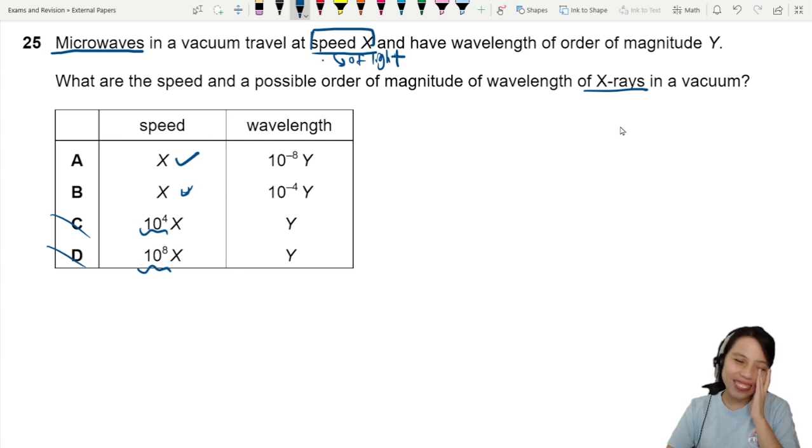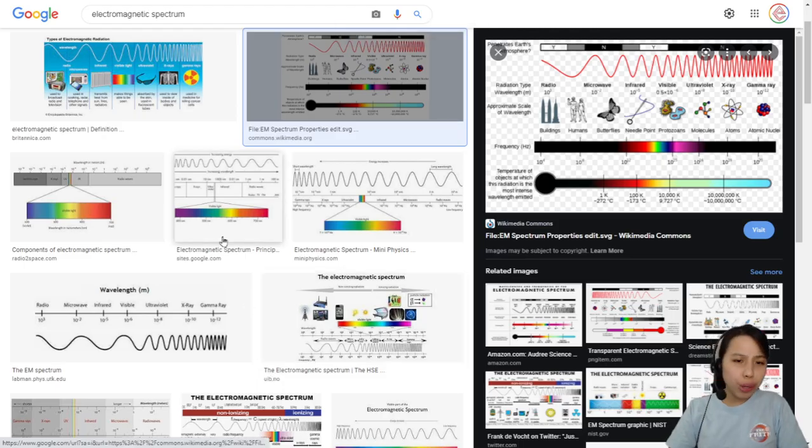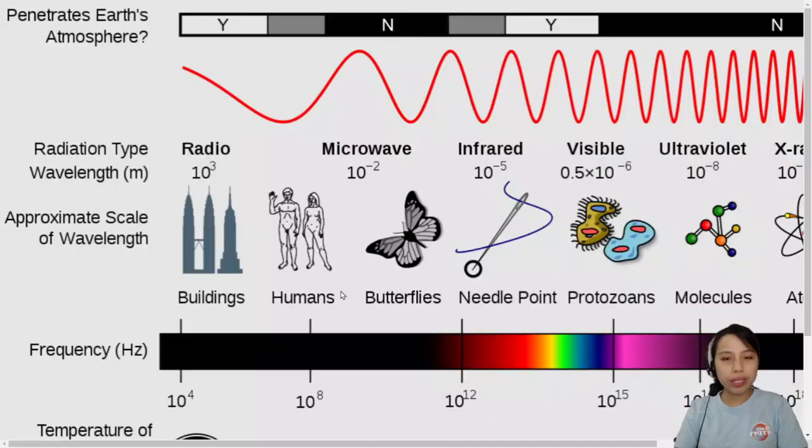Now the wavelength. How many times smaller is this X-ray compared to microwave? Because you see, it's a factor of wavelength. This is why we got to remember our electromagnetic spectrum facts. If you don't have it in your textbook or notes, you can just literally type electromagnetic spectrum and Google it.